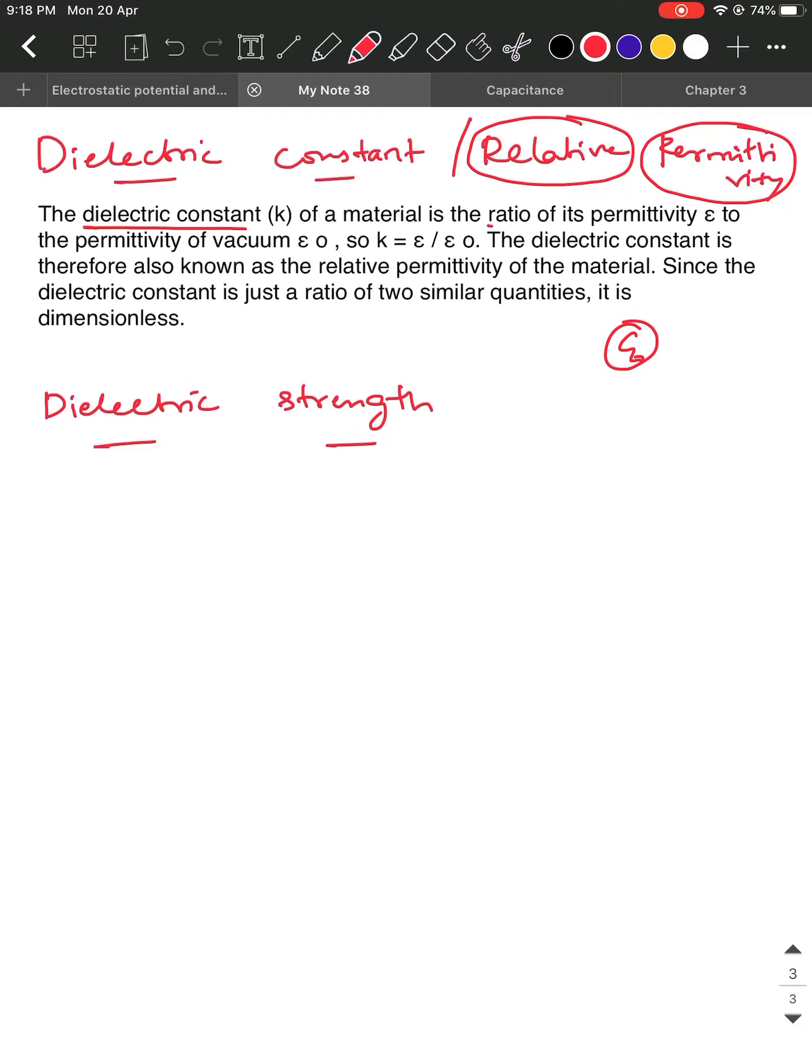It is defined as the ratio. The dielectric constant of a material, of an insulating material, is defined as a ratio of its permittivity to the permittivity of vacuum. So dielectric constant is represented with the symbol kappa.